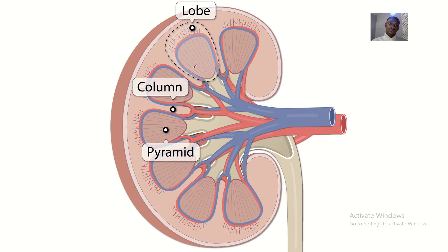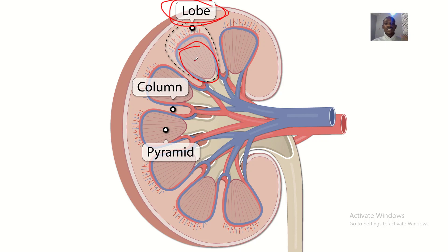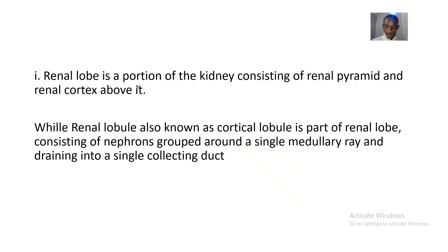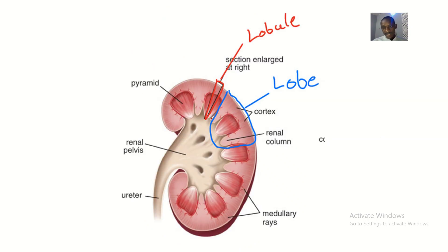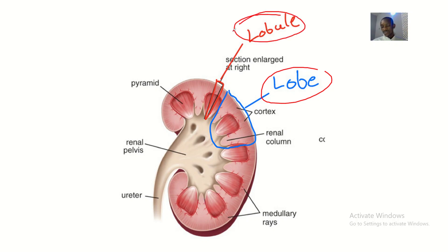This is actually the renal lobe — let me give you a brief explanation before we go in. The structure inside the renal lobe is what we call the renal lobule. This whole space shown in blue is the renal lobe, while this smaller portion inside it is what we call the renal lobule.